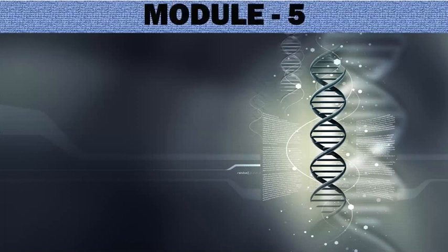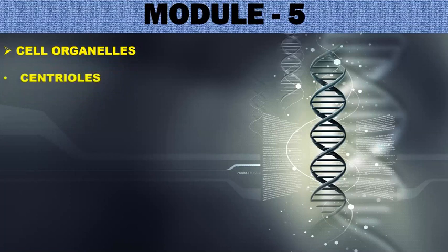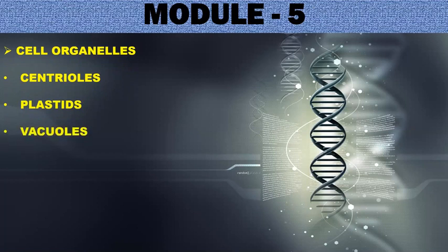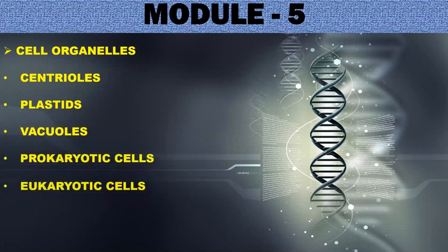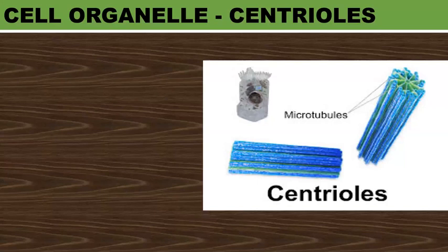In this Module 5, we will further discuss the topics of cell organelles such as centrioles, plastids, and vacuoles. We will study two types of cell, that is prokaryotic and eukaryotic cells. And lastly, we will learn to prepare a stained slide of onion peel and cheek cells.